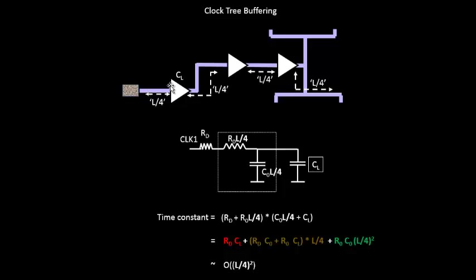We can keep on adding buffers, but adding too many buffers will have certain impacts on the design. The first impact is it will increase the area of your design — you will have unnecessary buffers placed all over if you keep adding them at the center and so on. The second problem is all these buffers will be switching, and since this is a clock network, it is a heavy switching network. In the event of switching, each buffer will demand current from the supply.